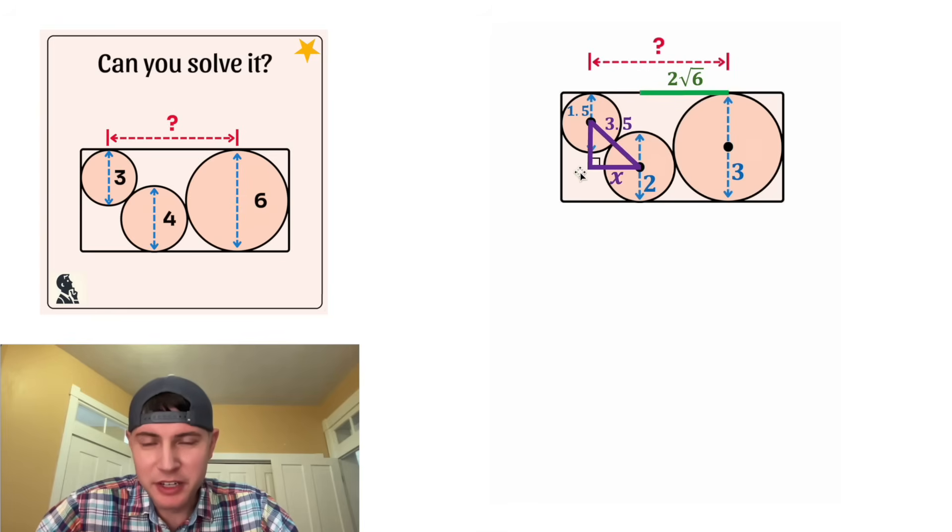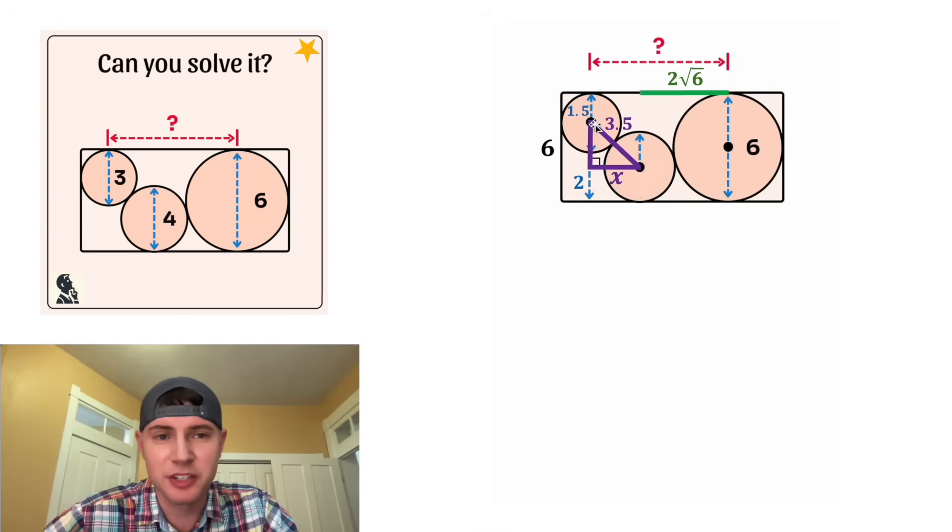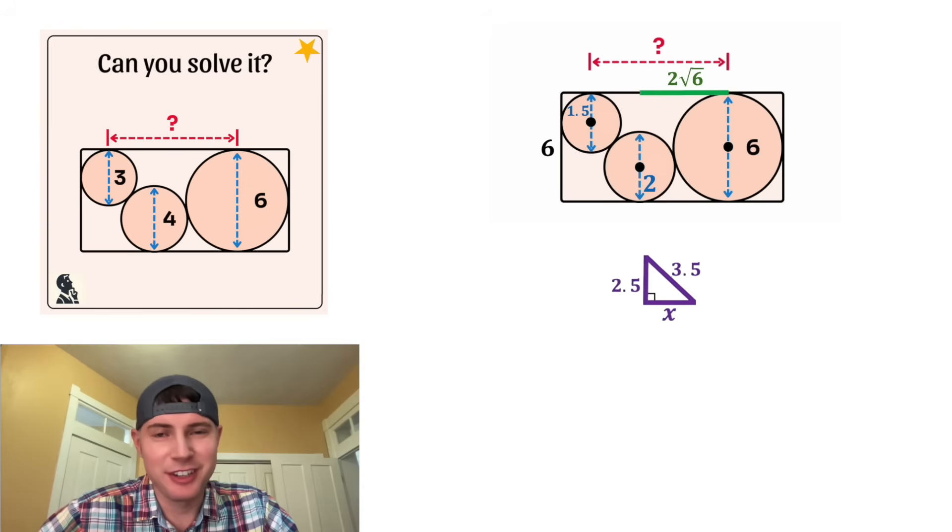Then let's drop this perpendicular and let's find its distance. Since this largest circle had a diameter of six, that means the height of this rectangle is also equal to six. And then we can bring this radius of two over here. So we need two plus the purple distance plus 1.5 to equal six. That means our purple distance is going to be equal to 2.5. And now let's play with this triangle.